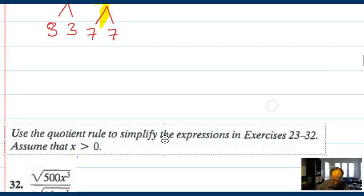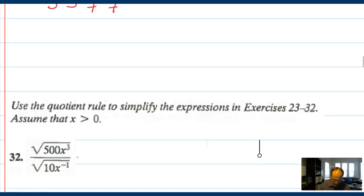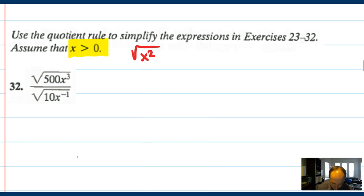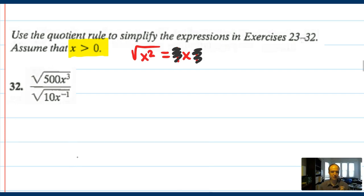The first problem has a special direction. It says simplify, but it also says assume that x is greater than 0. The reason they say that is so we don't have to worry about any rules about the absolute value of x squared, or the square root of x squared being the absolute value of x. We can safely ignore the absolute value stuff and just say those reduce to x. That won't be true later on, but they're simplifying it for us for now.